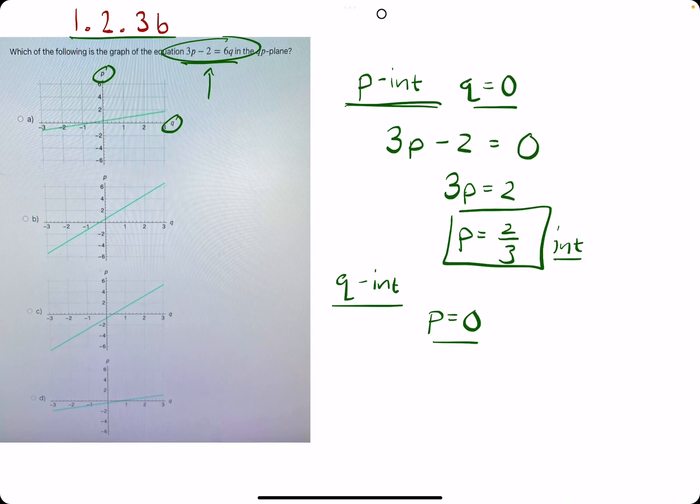I think there are two. We could eliminate, for example, option C because its p-intercept is negative. It's crossing through a negative p-value or negative y-value on the p-axis. Same with D. So we're left with A and B.